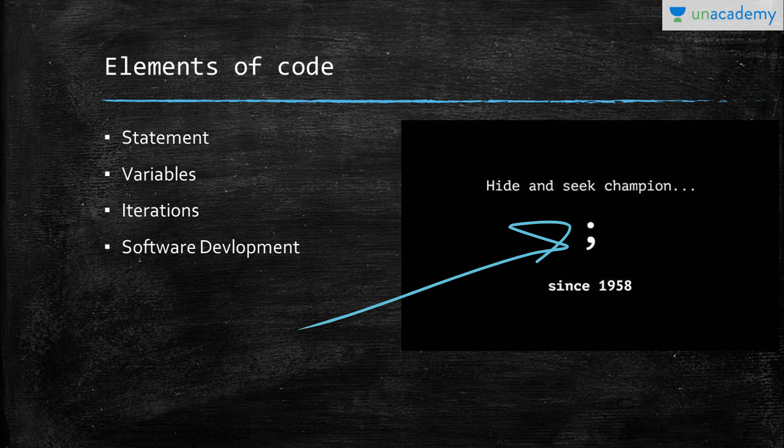Moving on, let's start with statements. A statement is the smallest executable token of a programming language. It can be anything - it can be a full sentence, it can only be just this little guy, a semicolon, it can be a comparison value, can be a variable. That's all called a statement.